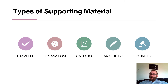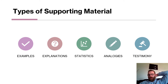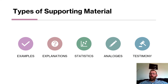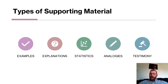When you are actually going through the material you're researching — reading articles, books, periodicals — what kind of stuff are you supposed to be pulling from it? You want to use examples, explanations, statistics, analogies, and testimony. This stuff relates to what's coming in future lectures regarding methods of informing — this is the type of content you want to pull out to inform your audience.